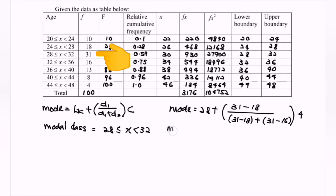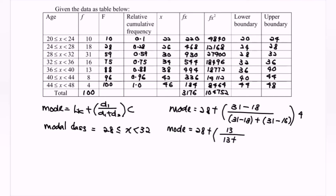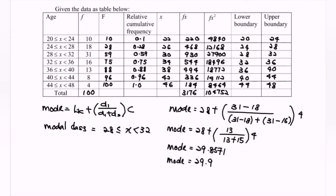So rewrite the situation. Mode will be equal to 28 plus bracket (31 minus 18), and we have 13, over (13 plus 31 minus 16), and we have 15, multiplied with 4. So the value for mode is equal to 29.8571. Rounding up, we will have 29.9 as the mode.